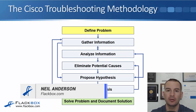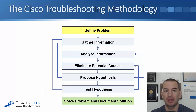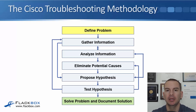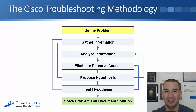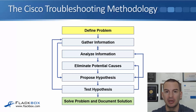This is the official Cisco troubleshooting methodology diagram and this is the recommended way by Cisco to work through troubleshooting a problem. As you get more experienced you'll be able to troubleshoot naturally without a diagram like this, but it's quite useful if you're new to networking to lay out in a logical fashion the steps you can follow to figure out what's causing a problem.